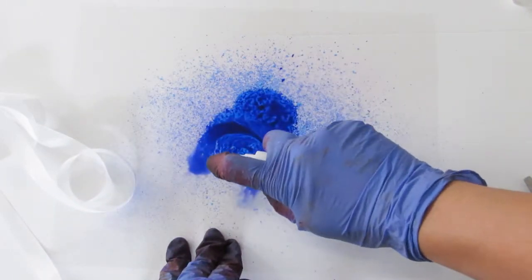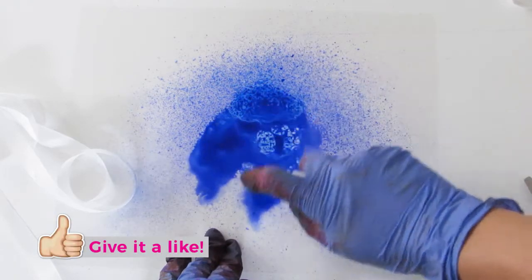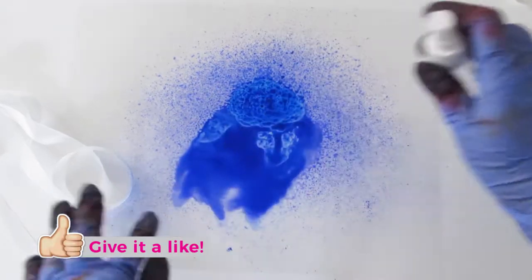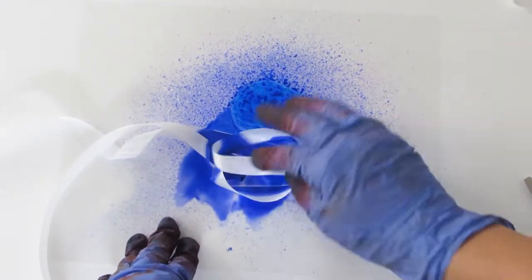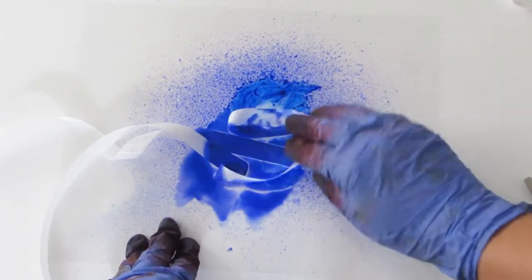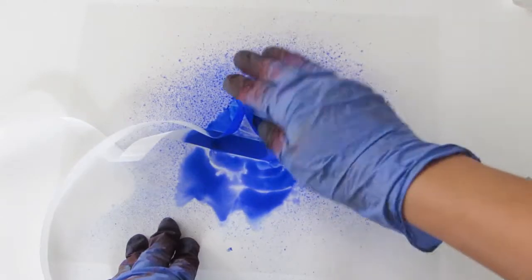Now you're going to spray some water onto your alcohol ink. Just be generous. I felt like I wasn't generous enough so I had to add a little bit more, and go ahead and put the ribbon on there and just wipe off that ink onto it until it's fully saturated.